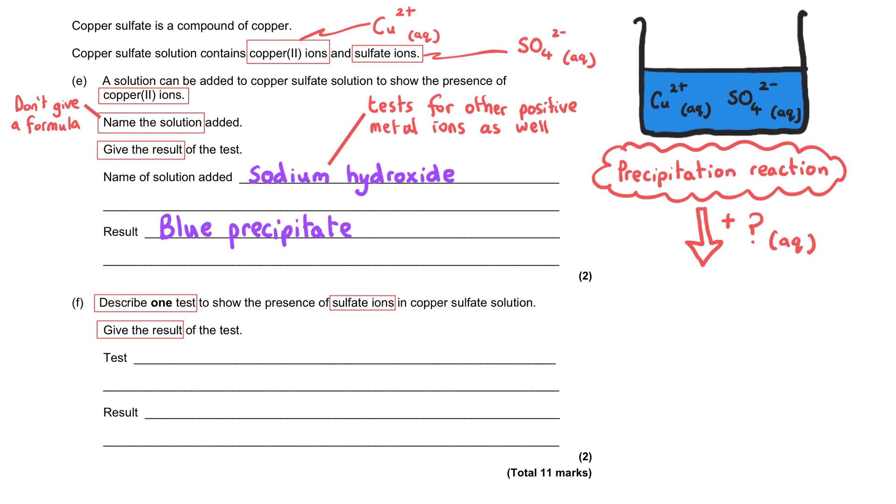When we're testing for sulfates we need to know that sulfate ions react with another type of ion to make a new precipitate. The ion in question is the barium ions because the barium ions react with the sulfate ions to make barium sulfate.